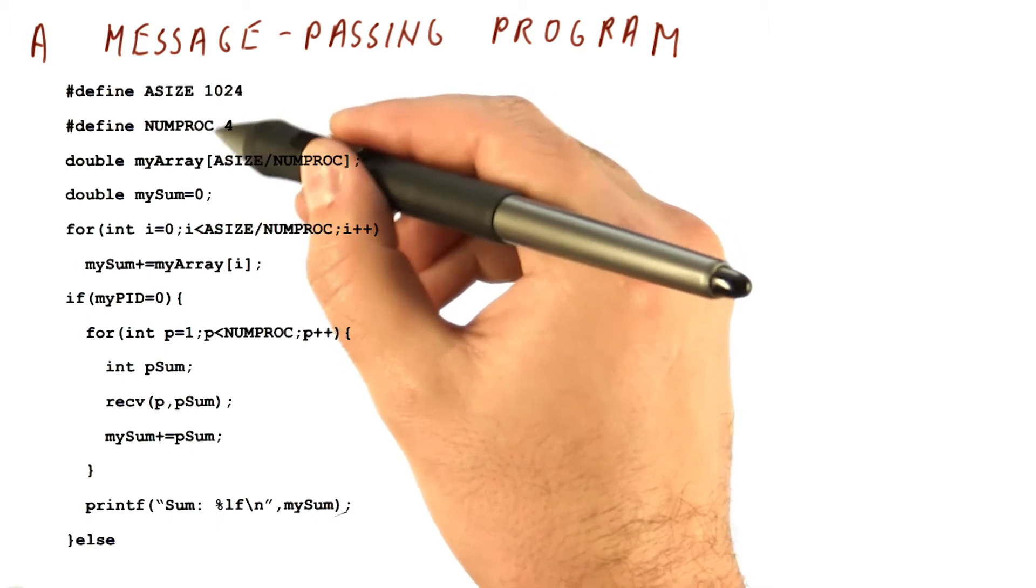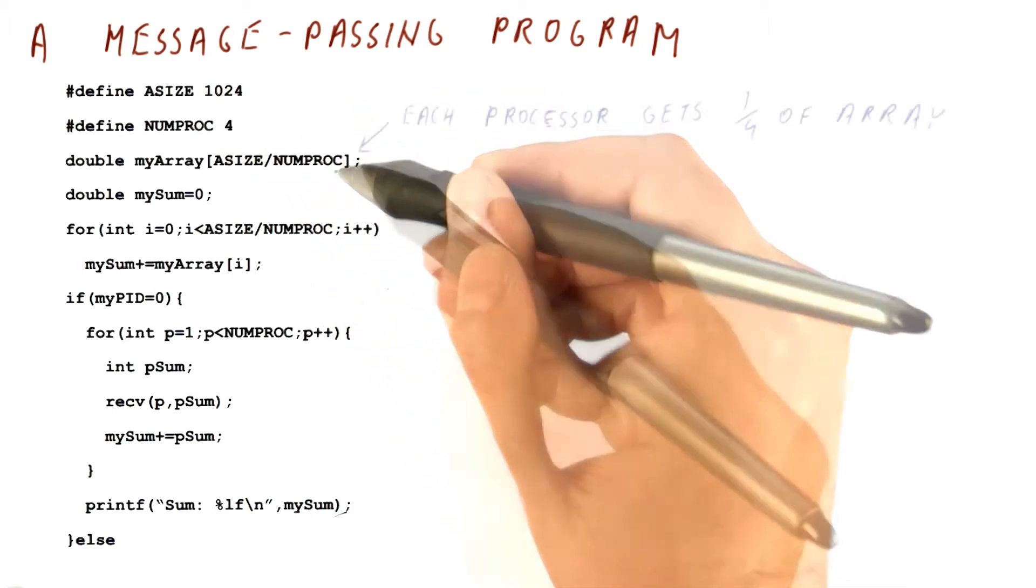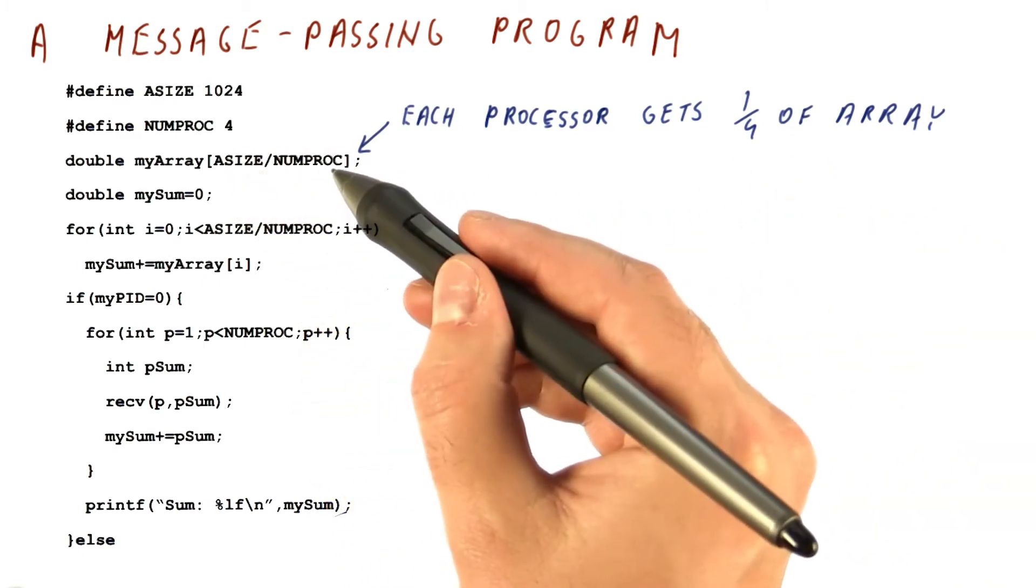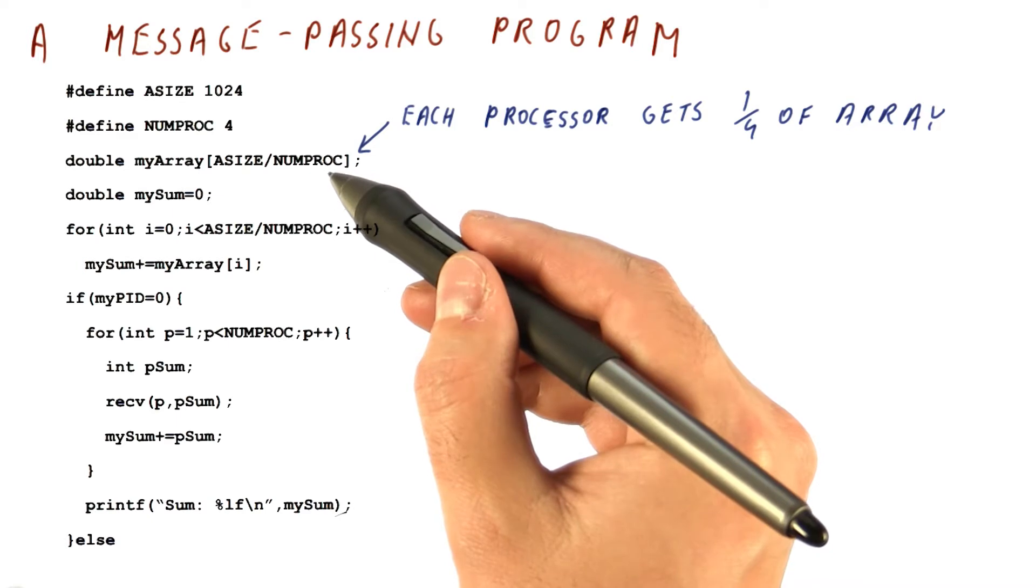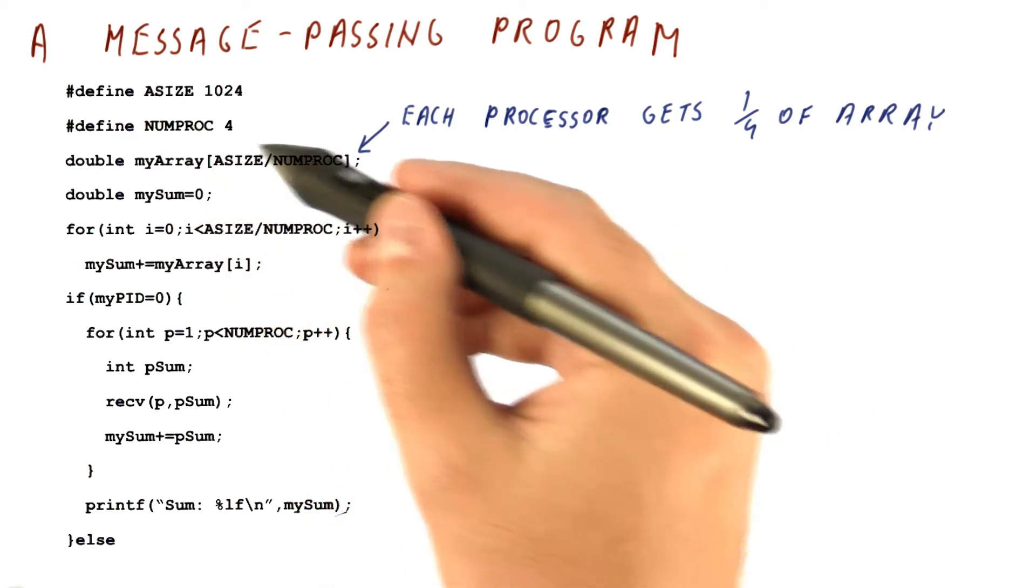This is the number of processors we have. In a message passing program, each of the processors will get one quarter of the array. They cannot access each other's memory directly. So each one of them only allocates its part of the array in its memory.